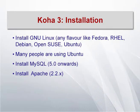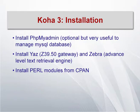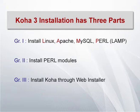For installation, there are four steps: first install a GNU Linux distribution — normally Debian or Ubuntu; install MySQL 5.0 or higher (present Koha supports MySQL 5.7); install Apache; and install Perl, which is almost readily available with all Linux releases. You can also install phpMyAdmin as a MySQL front-end tool. You need to install Perl modules related to YAZ, Zebra, and other CPAN modules. When the system is ready, install Koha through the Web installer. The whole process is grouped into three parts: LAMP installation, Perl modules installation, and Koha Web installer.